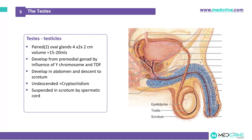The male testicles are paired oval glands which measure about 4 x 2 x 2 cm and have a volume of 15–20 ml. The testicles develop from a primordial gonad under the influence of the Y chromosome; they develop in the abdomen and later descend to the scrotum.